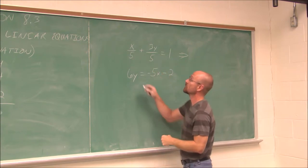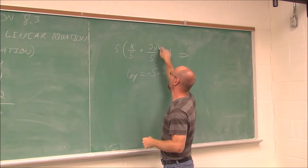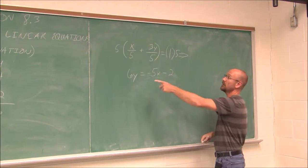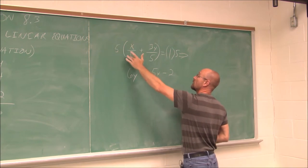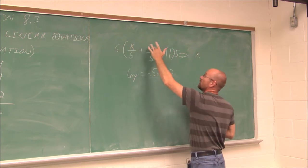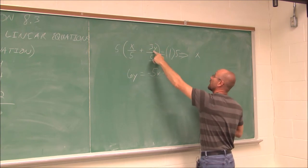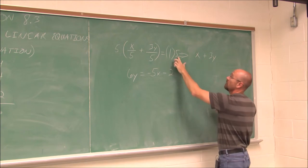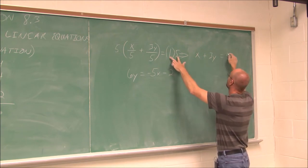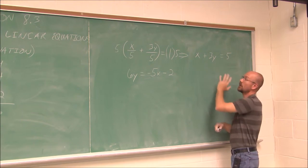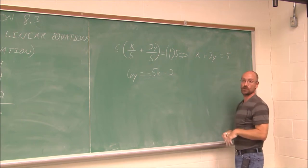So I'm going to multiply all terms by 5. And what I do to one side, I do to the other. And what I get: 5x over 5, that reduces to just x. 5 times 3/5, the 5's would cancel. It's going to leave me with 3 times that y. And 5 times 1 is 5. And if we look at what we have here, x plus 3y equals 5, a much nicer equation to work with.